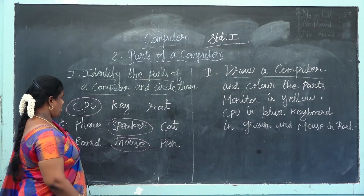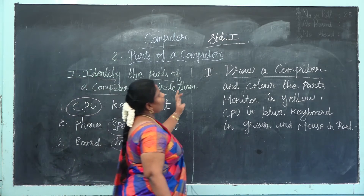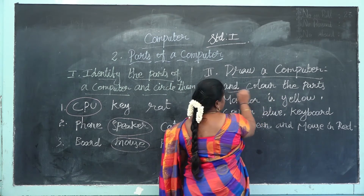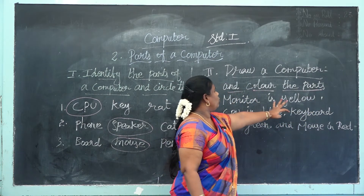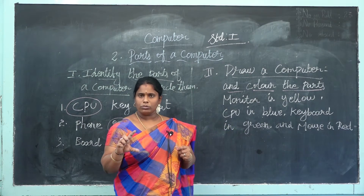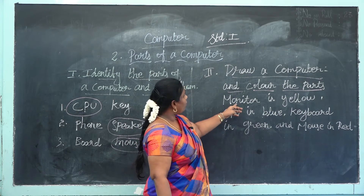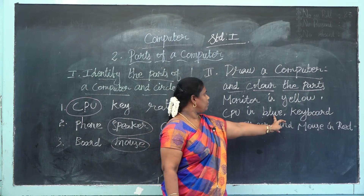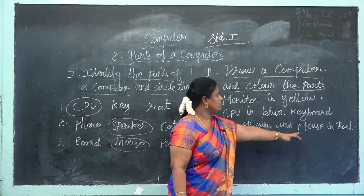What is the next question? Draw a computer and colour the parts. First, you have to draw one computer with keyboard, mouse, and CPU. Then colour the parts: monitor in yellow, CPU in blue, keyboard in green colour, and mouse in red colour.